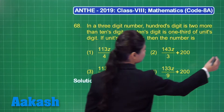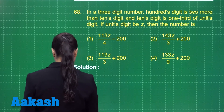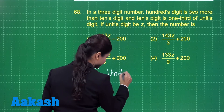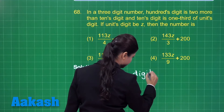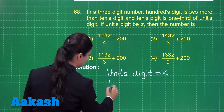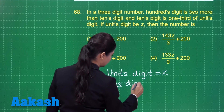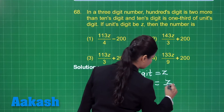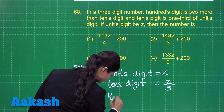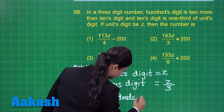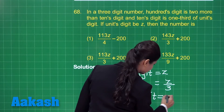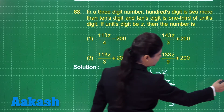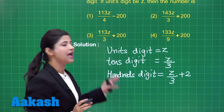As we are talking about a 3-digit number, the units digit is z. Talking about the 10th digit, it is given that the 10th digit is 1 third of the units digit, that is z upon 3. And the 100th digit is 2 more than the 10th digit, that is z upon 3 plus 2. So this gives us the 10th, 100th, and units digits.